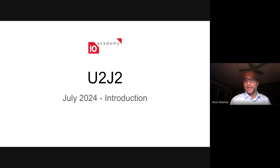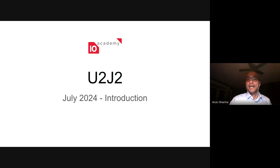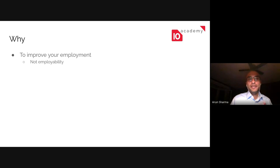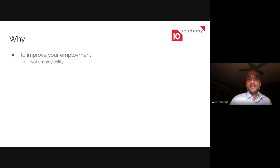Good morning everyone. It's the 29th of July and we're on the first day of our second edition of the University to Jobs transition program. We're really happy to have you here. Today we're doing an introduction session for the coming three months. Welcome — we're happy that you're here. Over the next three months, we want to make each and every one of you into an expert user of AI tools. We're here because we want to help improve your employment — not necessarily your employability — and we distinguish between those two characteristics.